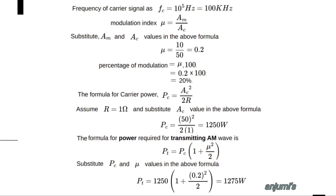Modulation index μ = AM divided by AC. AM and AC values we already have, so we substitute: μ = 10 divided by 50 = 0.2. So modulation index equals 0.2. Percentage of modulation = μ × 100 = 0.2 × 100 = 20%. So the modulation percentage is 20%.